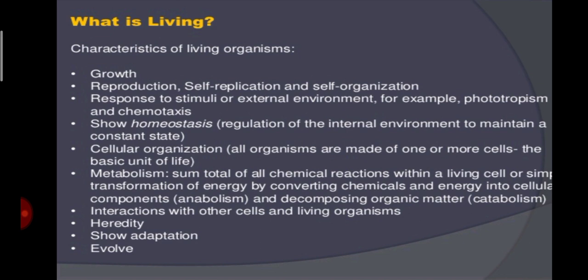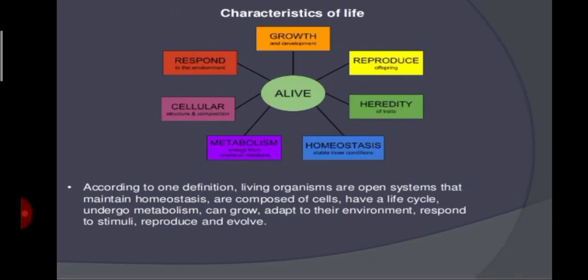Living things grow with increase in mass and increase in number of individuals or cells. In multicellular organisms, growth occurs by cell division or increase in number of cells. According to one definition shown in this slide, living organisms are open systems that maintain homeostasis, are composed of cells, have a life cycle, undergo metabolism, and can grow.